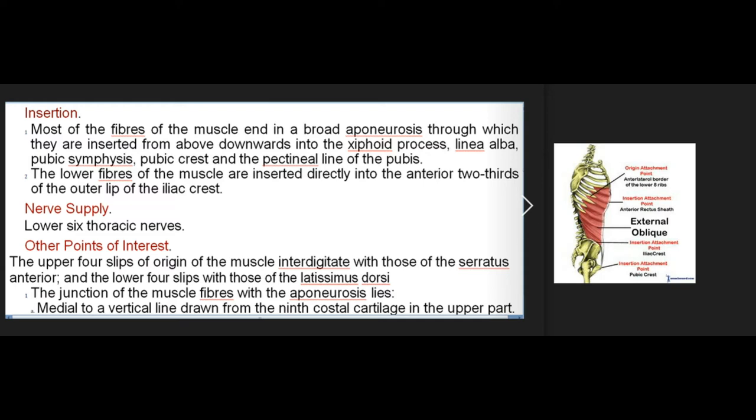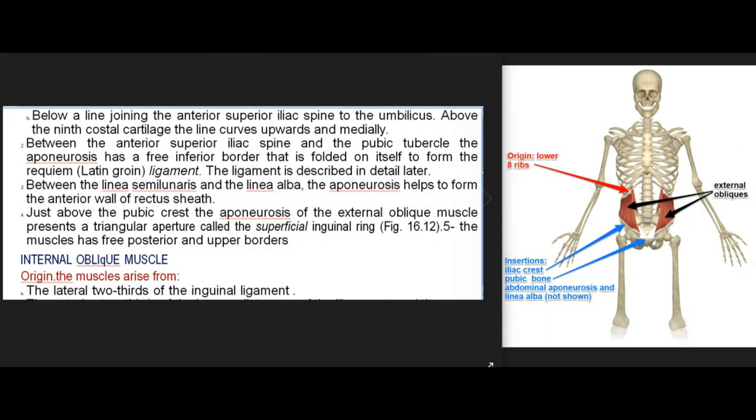Other points of interest: the upper four slips of origin of the muscle interdigitate with those of the serratus anterior, and the lower four slips with those of the latissimus dorsi. The junction of the muscle fibers with the aponeurosis lies medial to a vertical line drawn from the 9th costal cartilage in the upper part, and below a line joining the anterior superior iliac spine to the umbilicus. Between the anterior superior iliac spine and the pubic tubercle, the aponeurosis has a free inferior border that is folded on itself to form the inguinal ligament.